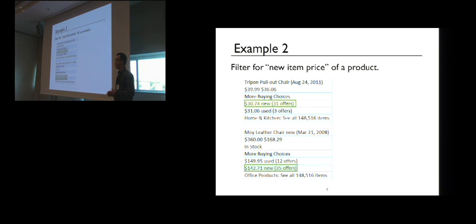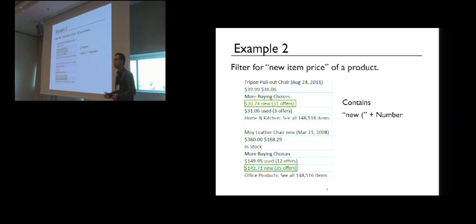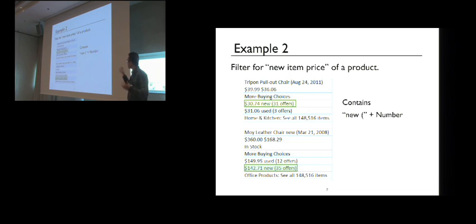Now I'll show one more example to demonstrate the diversity of programs our system can learn. The user wants to filter for new item prices of a product, selecting two specific string items from the column. By just giving examples, our system learns a different program that looks for strings containing a new parenthesis followed by a number — using the contains predicate rather than the starts-with predicate from the previous example.